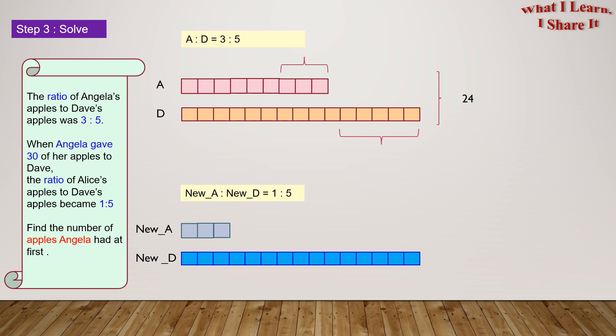For the third time, if we put 1 more unit for new A, we will have to put another set of 5 units for new D. The total units in the ratio 1 is to 5 is now 24. Yay! We got both the ratio's units equal!